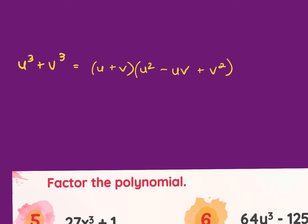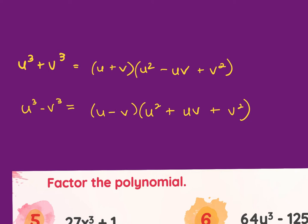If it's a subtraction — u³ minus v³ — you still cube root both of them, square the first one, find the product, square the last one, and then it is same, opposite, always positive.